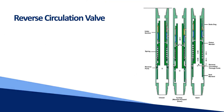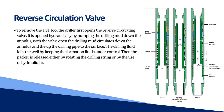Reverse circulation valve: to remove the DST tool, the driller first opens the reverse circulating valve, which is opened hydraulically by pumping drilling mud down the annulus. With the valve open, drilling mud circulates down the annulus and up the drilling pipe to the surface. The drilling fluid kills the well by keeping the formation fluids under control. The packer is then released either by rotating the drilling string or by use of a hydraulic jar.